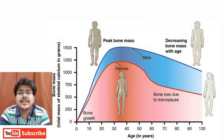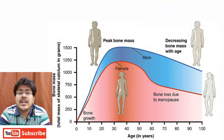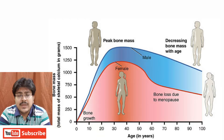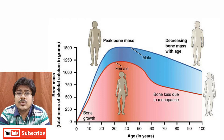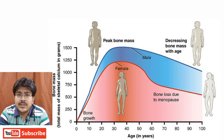In this diagram we can see that the bone mineral density of men is much more than women. At the age of 30 to 40, bone mineral density reaches its peak. But after the age of 50, it decreases. In men there is a slow decrease due to slow decline of androgen levels, while in females there is a rapid decrease due to decreased production of estrogen from the ovaries.